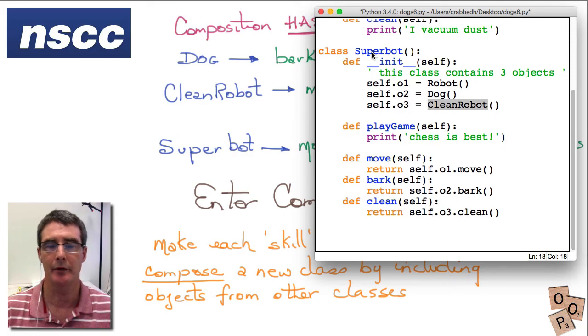What else do we have to define in our super bot here? We have to define these other characteristics that it can do. It can move, bark, and clean. But we can get those from the objects that we've included in the super bot up here. So we define a move, a bark, and a clean. The move comes from this object up here. It gets from a robot.